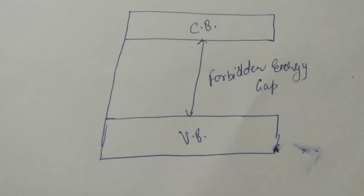As the name implies, the forbidden energy gap is a band where no electron stays, as it has no energy. Valence electrons pass through this gap when moving to the conduction band. If the forbidden energy gap is greater, it means the valence band electrons are tightly bound to the nucleus, and more external energy — equal to the forbidden energy gap — is required to push electrons out of the valence band.